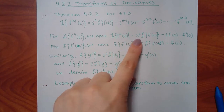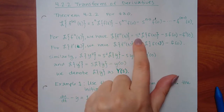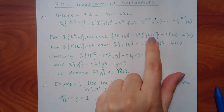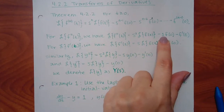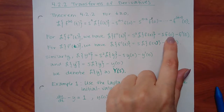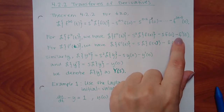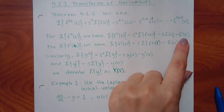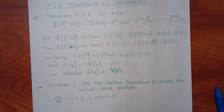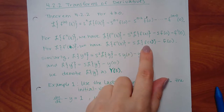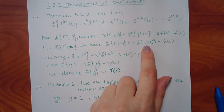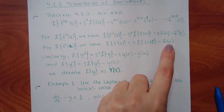If I have a double prime, I get s squared times the Laplace of F, minus s times F of 0, minus F prime of 0. And if it's just one prime, it would be s times the Laplace of F, minus F of 0.